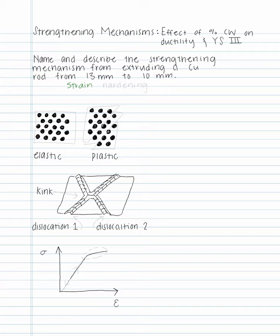This strengthening mechanism is strain hardening. Deforming a metal below its recrystallization temperature increases the dislocation density. Dislocation to dislocation interactions are repulsive. Therefore, the motion of a dislocation is hindered by the presence of other dislocations.